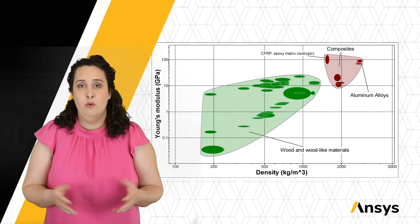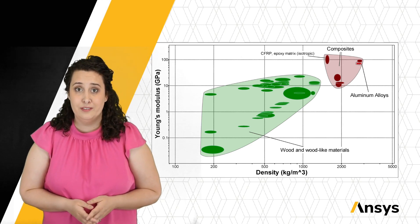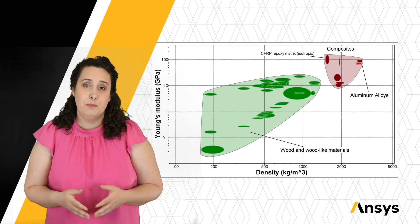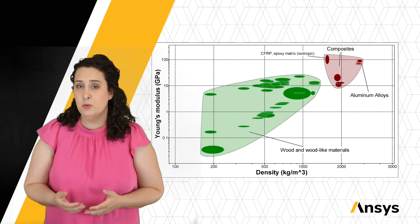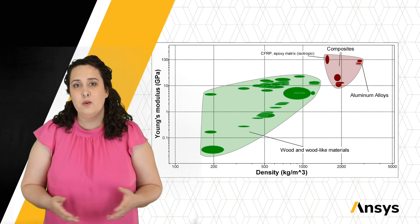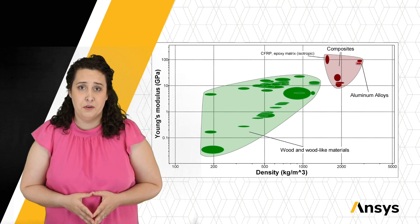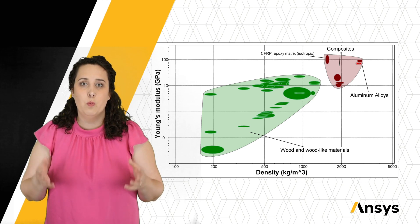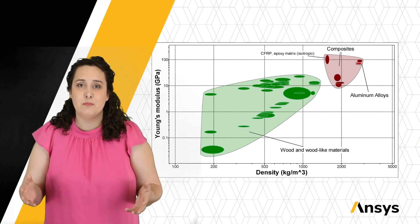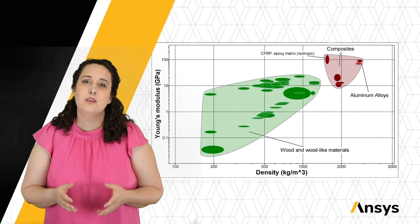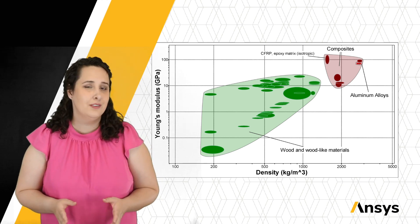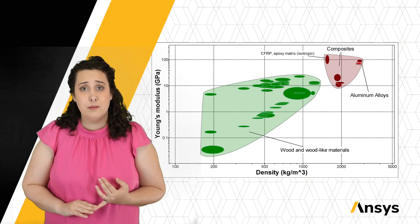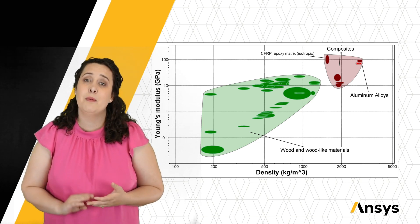The first pole vaults were made out of wood, used to get across small streams. Then, when it became a sport, we went from wood, eventually to aluminum — a lightweight metal — and finally we make these pole vaults mainly out of composite materials, sometimes with an aluminum core.